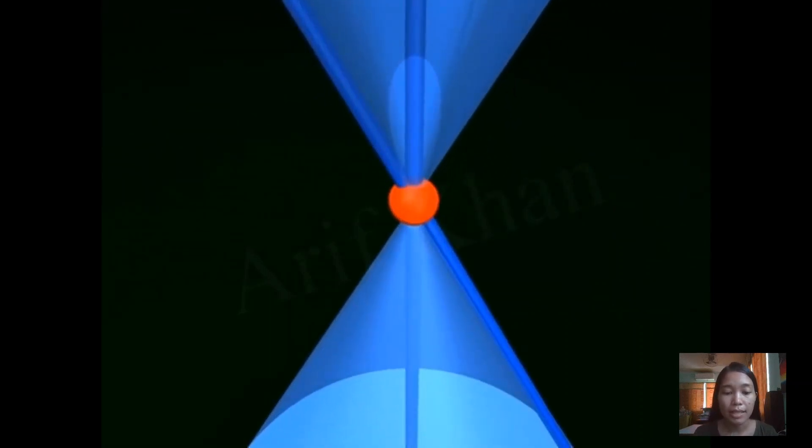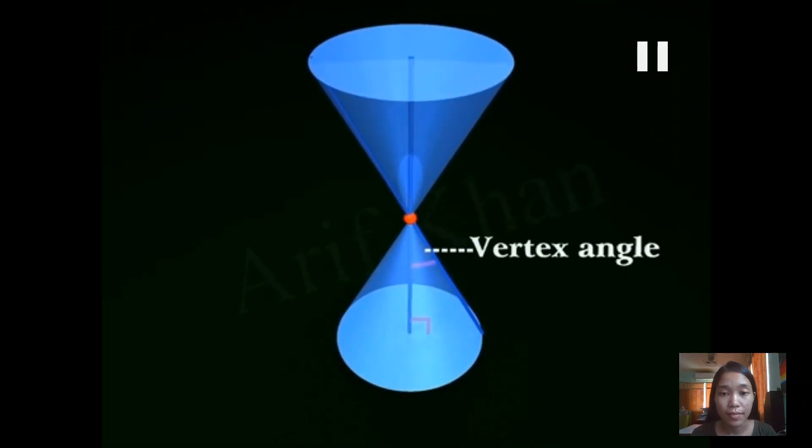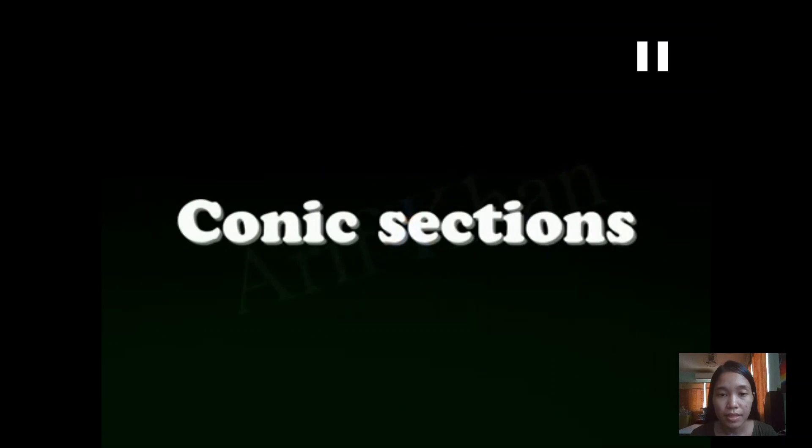Notice we can use this later as a reason for the conic sections that we will form. That is the angle from the vertical line or the axis to the generator. We call that the vertex angle. We know this from geometry, the vertex angle.